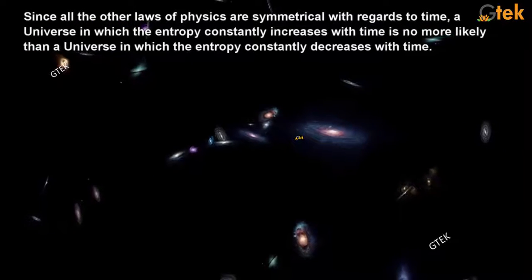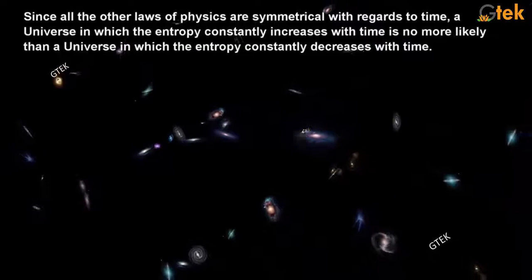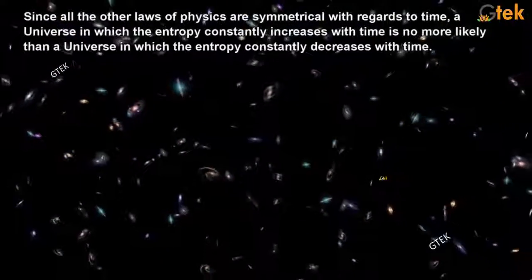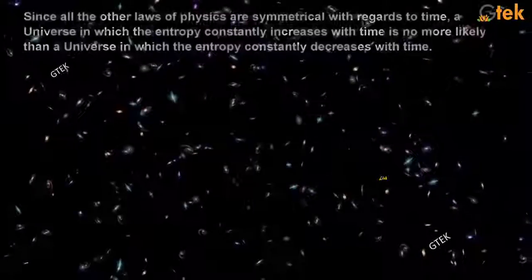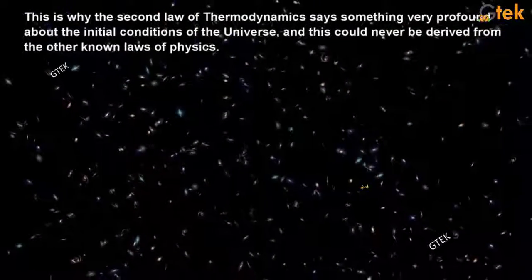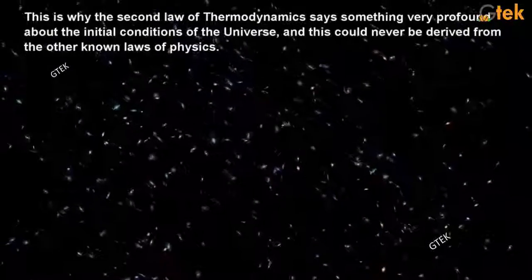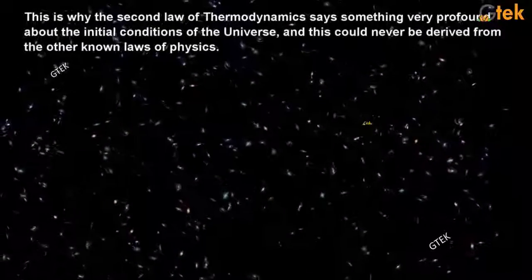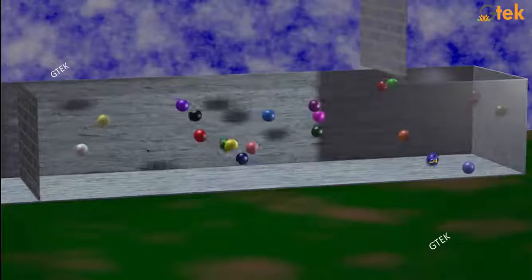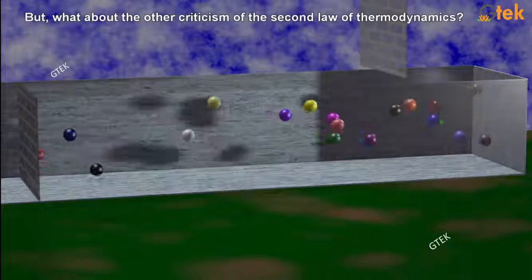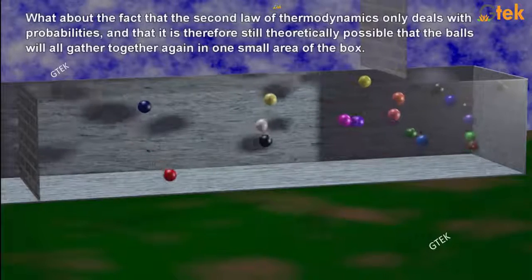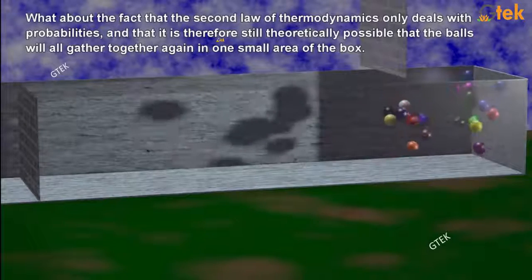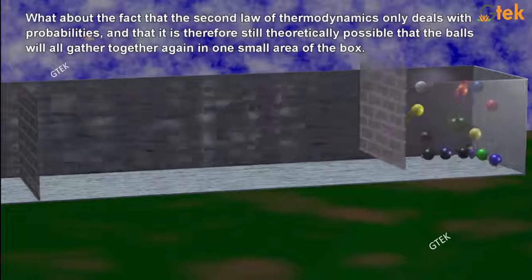Since all the laws of physics are symmetrical with regards to time, a universe in which entropy constantly increases with time is no more likely than a universe in which entropy constantly decreases with time. This is why the second law of thermodynamics says something very profound about the initial conditions of the universe, and this could never be derived from the other known laws of physics. But what about the other criticism of the second law of thermodynamics?